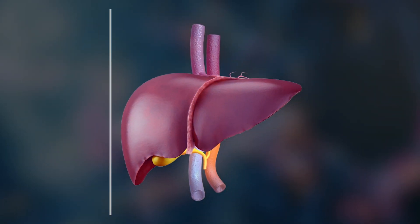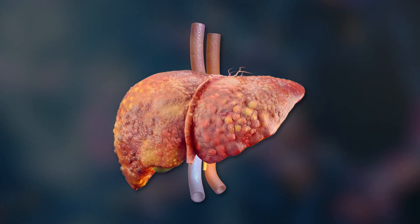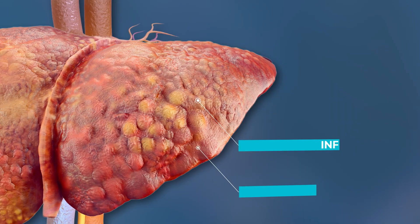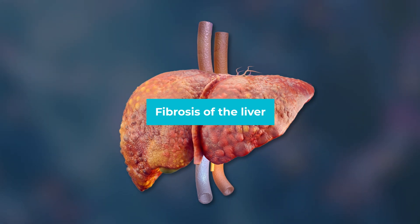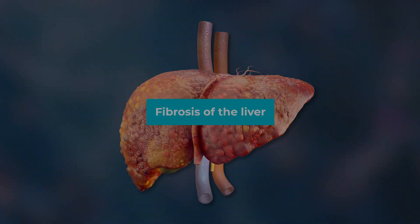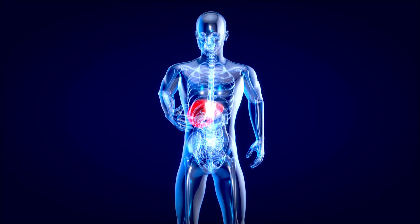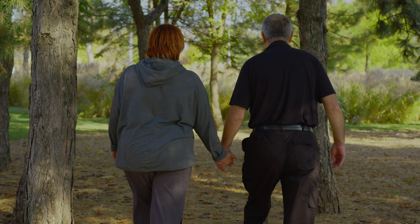Fatty liver disease affects more than 115 million people worldwide. In this video, we'll discuss the details of fatty liver disease and the long-term implications it may have. Fatty liver disease occurs when excess fat builds up in the liver, which leads to inflammation and scarring, otherwise known as fibrosis of the liver.